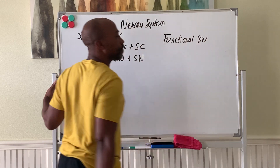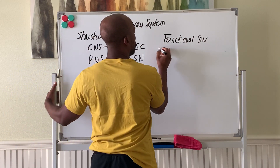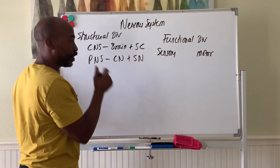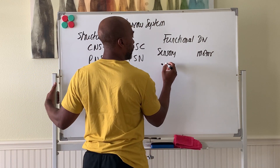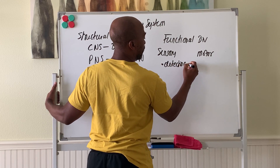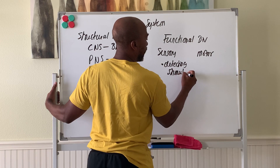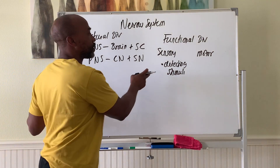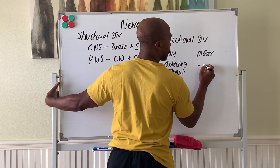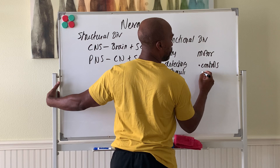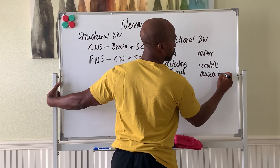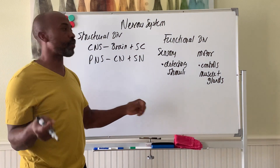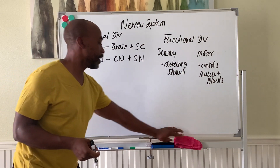Functional divisions of the nervous system include your sensory division and your motor division. Your sensory division is involved in detecting stimuli — things like sound, taste, vision, and pain. That's the job of the sensory division. The motor division is what controls your muscles and glands, so your salivary glands and your muscles to move the limbs around are controlled by your motor division.